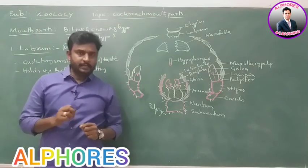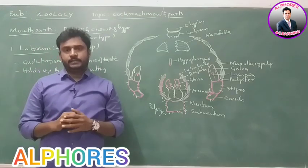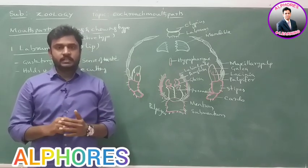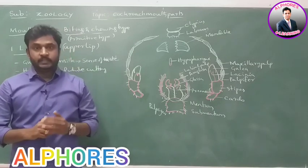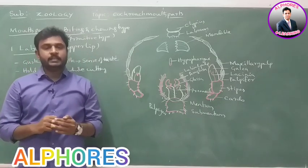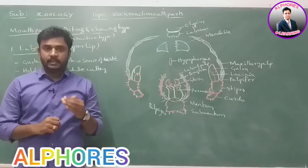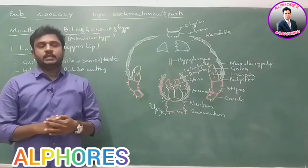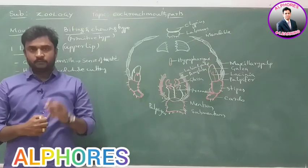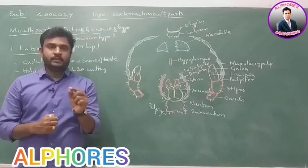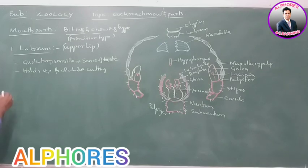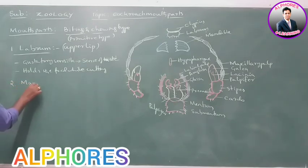Labrum is a triangular plate which is movably attached with the clypeus. The inner side of the labrum consists of sensilla called gustatory sensilla, which help in tasting of food materials. Labrum also holds food materials while mastication. So labrum is the first part present in the mouth parts of a cockroach.